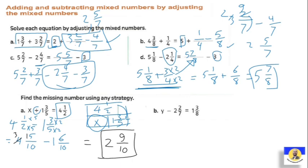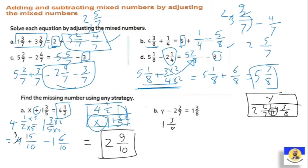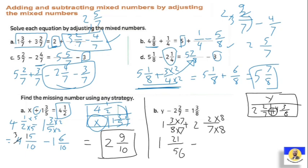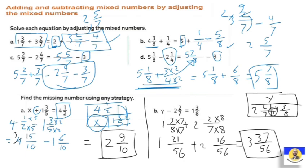Next: y minus two and two over seven equals one and three over eight. Using the chart: y is the greatest at the top. Add one and three over eight plus two and two over seven to find y. Make like denominators by multiplying by seven up and down and eight up and down, giving one and twenty-one over fifty-six plus two and sixteen over fifty-six. Adding: twenty-one plus sixteen is thirty-seven over fifty-six, and one plus two is three. So y equals three and thirty-seven over fifty-six.